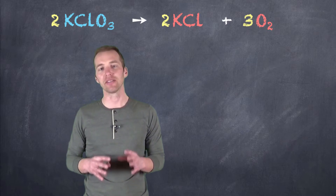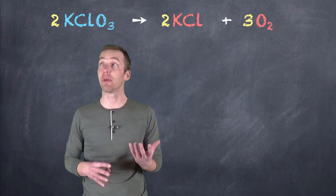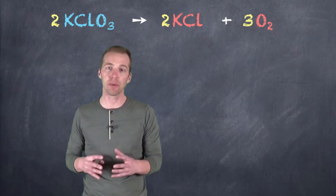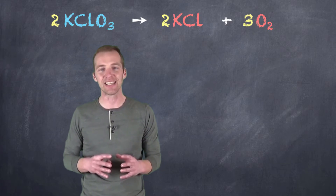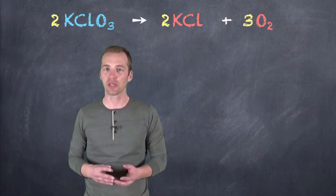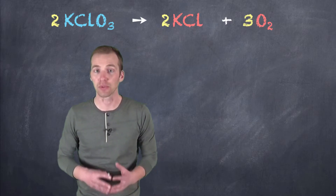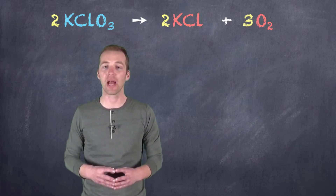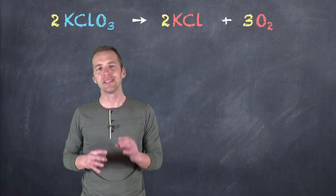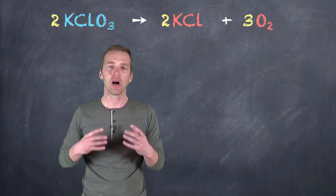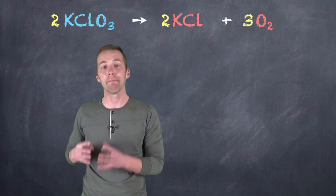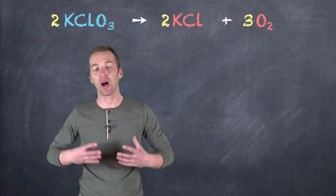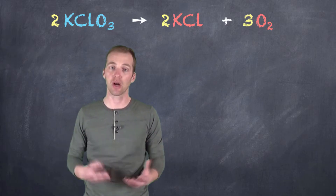But what stoichiometry relies on is an understanding not only of the numbers in the balanced chemical equation, but also the masses of those components. Because we can't easily count out atoms or molecules — in fact, it would be almost impossible due to the sheer number of them involved in a chemical reaction. But what we can do is measure a large number of them by mass, using, say, an electronic balance.